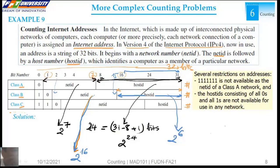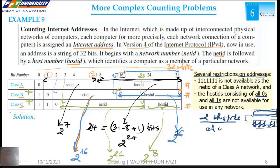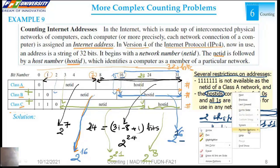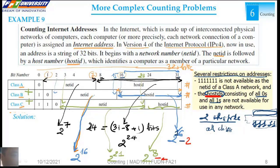For Class C, from bit 3 to 23, we have 2 to the power of 21, and the host ID is 2 to the power of 8. We can use the sum rule. But we have several restrictions on addresses. The host ID consisting of all 0s and all 1s are not used in any class. So we have to subtract 2, minus 2, minus 2.